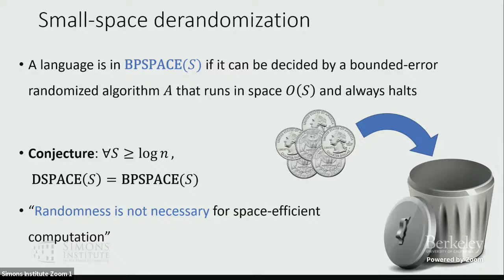I think this is a really nice problem. It's appealing in a quasi-philosophical way, much like other topics in complexity theory like the P versus NP problem — it seems to be saying something very fundamental about the power of randomness. But another thing I find appealing about this problem that sets it apart from P versus NP is that there has actually been quite a lot of successful progress on it. We have many theorems that say some kind of interesting de-randomization of space-bounded computation, even if they don't fully prove this conjecture.